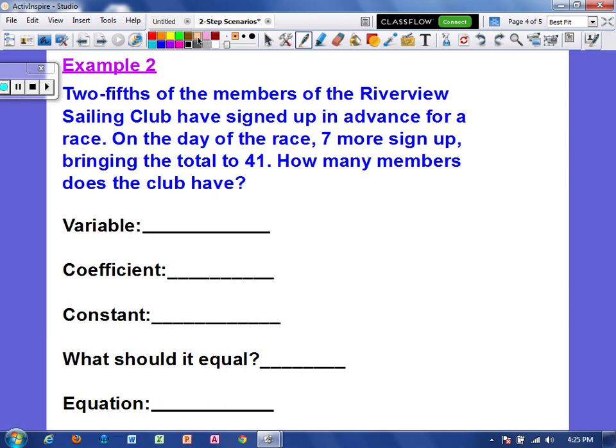Okay, so let's talk about variable and that's what we don't know. So the question wants to know how many members does the club have? So we don't know how many members there are. And I'm going to represent that with the letter M. Now the coefficient, that is whatever is being multiplied by the variable. So I want to see what number is related to the amount of members. Well, it says two-fifths of the members. So that would be like two-fifths times the amount of members. So that would be the coefficient.